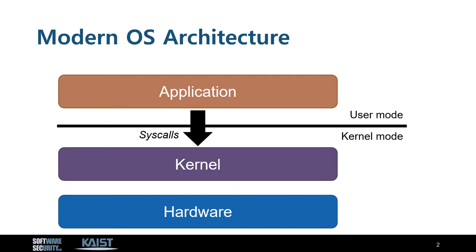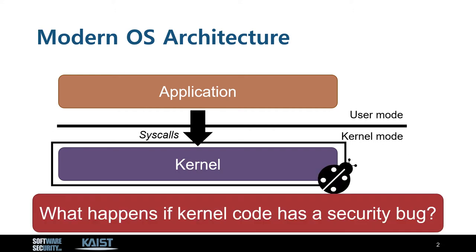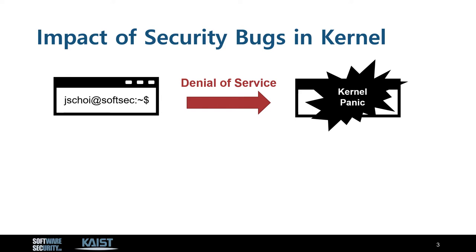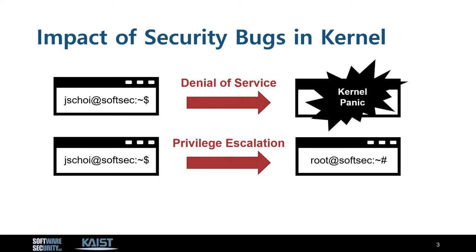In modern operating systems, a user application does not directly access hardware resources. Instead, it makes a request to the kernel by invoking a system call, or syscall in short. Then the kernel code runs in a privileged mode to solve the request and interact with the hardware. A malicious attacker can incur denial of service by making the kernel crash. In the worst case, the attacker can escalate one's privilege and take over the whole system.